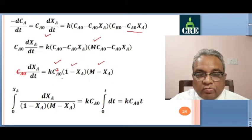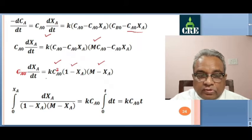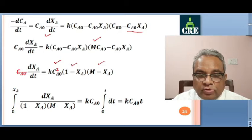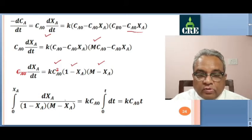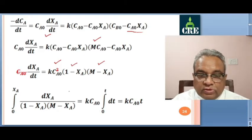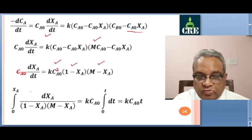After separating variables, integrating dt from 0 to t gives k CA0 t on the right hand side. On the left hand side, we integrate dXA divided by (1 minus XA)(M minus XA) from 0 to XA. At time t equals 0, XA equals 0 — no conversion. At time t equals t, XA is the instantaneous value.